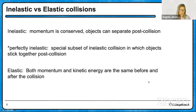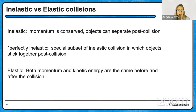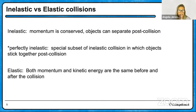There are two categories of collisions. The first is inelastic: momentum is conserved, and objects can separate post-collision. For example, if two cars collide and separate, and one is dented, some energy went into denting the car and some turned into sound. So for inelastic collisions, kinetic energy is not the same after the collision — but momentum is.